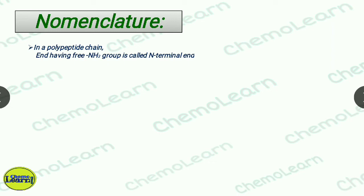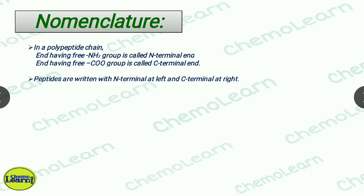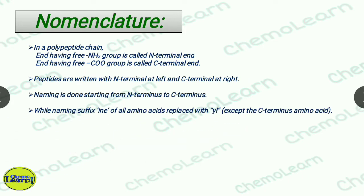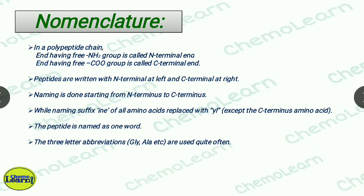Nomenclature: in a peptide chain, there are two ends. Where the NH3 plus group is present, we call it the N-terminal end, and where the COO minus group is present, we call it the C-terminal end. When writing peptides, the N-terminal end is written on the left and the C-terminal end on the right. Naming is done from N-terminus to C-terminus, i.e., left to right. The ending 'ine' in the amino acid name is replaced with 'yl', except for the last amino acid which retains 'ine'. All amino acid names are written together as one word with no spaces. Three-letter abbreviations for each amino acid can also be used for simplification.